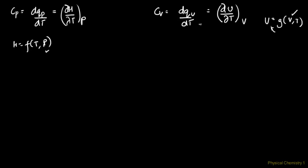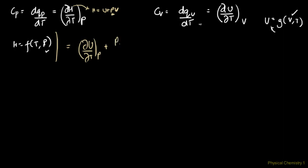Now I want to find how CP and CV are related. I'll write H as U + PV, which is always valid. Substituting into the expression for CP, it becomes ∂U/∂T at constant pressure plus, since P is constant it comes out of the differential, P times ∂V/∂T at constant pressure.